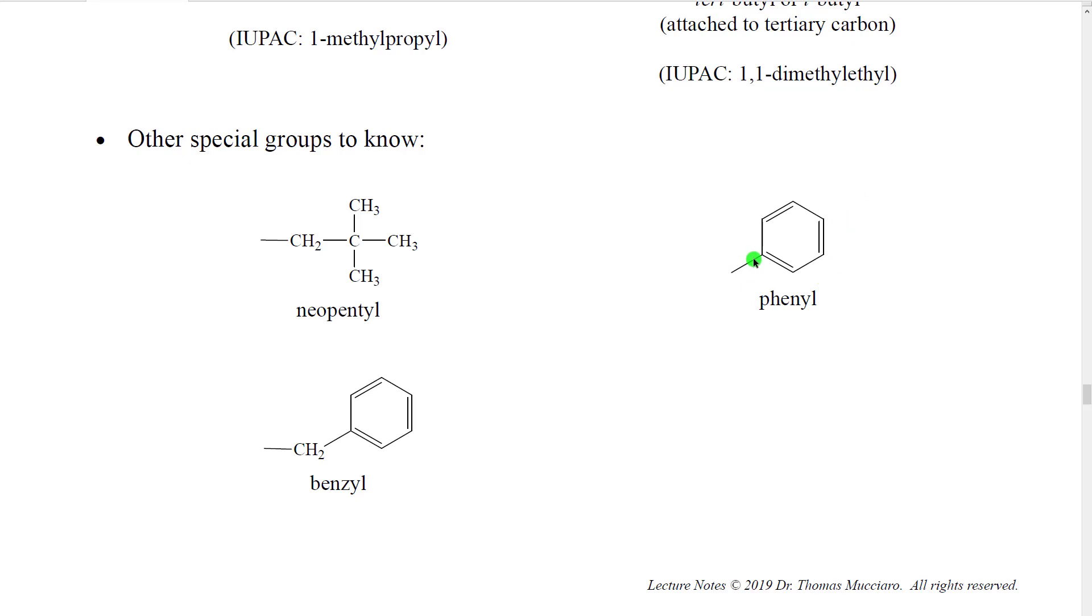This is a benzene ring where we've taken off one of the hydrogens and now we're attached to something else and it's called phenyl. And then this is a benzene ring with a CH2 and we're attached to a CH2. This is called benzyl. So these are the common names of substituent groups that you're going to need to memorize.